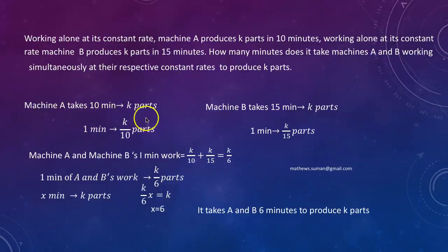Machine A takes 10 minutes to produce k parts. So in one minute, machine A produces k by 10 parts. Machine B takes 15 minutes to produce k parts. So in one minute, machine B produces k by 15 parts. Machine A and machine B together in one minute would produce k by 10 plus k by 15 that is k by 6 parts. So x into k by 6 equal to k. That would be x equal to 6. So it takes A and B 6 minutes to produce k parts.